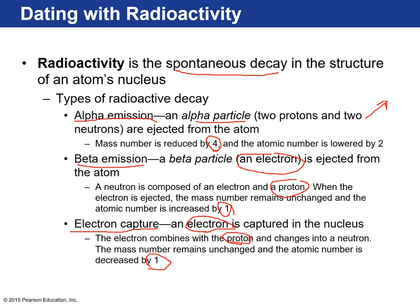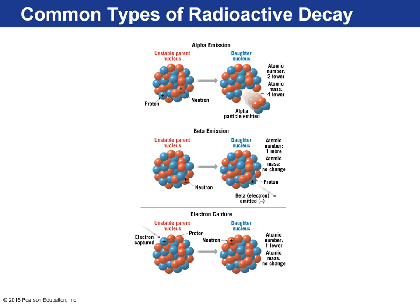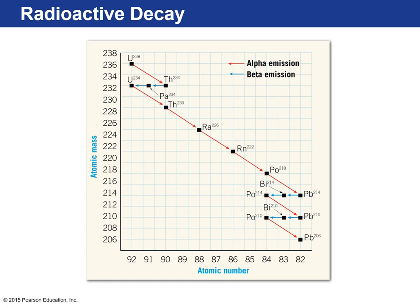There are three types of radioactive decay. Alpha emission ejects two protons and two neutrons from the nucleus, releasing X-rays and gamma rays — which is why radioactive elements are dangerous. Beta emission ejects an electron from the atom, converting a neutron to a proton and changing the element. Electron capture occurs when the nucleus captures an electron, changing a proton to a neutron and decreasing atomic number by one. The unstable decaying isotope is the parent; the resulting isotopes are the daughters. Uranium-238 undergoes a 14-step decay chain before becoming stable lead-206.